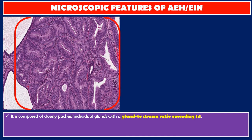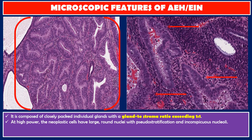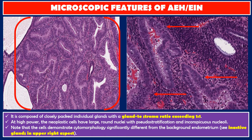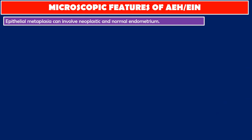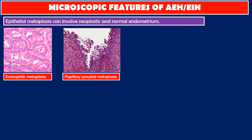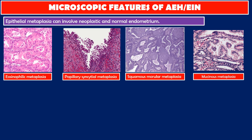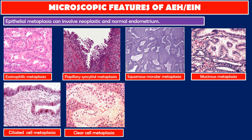It is composed of closely packed individual glands with a gland-to-stroma ratio exceeding 1 to 1. At high power, the neoplastic cells have large round nuclei with pseudostratification and inconspicuous nucleoli. The cells demonstrate cytomorphology significantly different from the background endometrium. Epithelial metaplasia can involve neoplastic and normal endometrium, including eosinophilic, papillary syncytial, squamous morula, mucinous, ciliated cell, clear cell, papillary, and hobnail metaplasia.